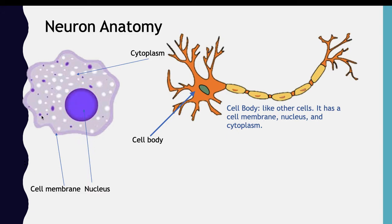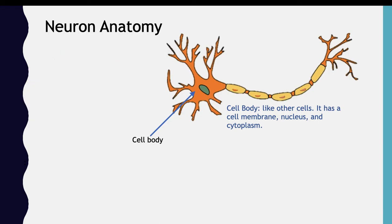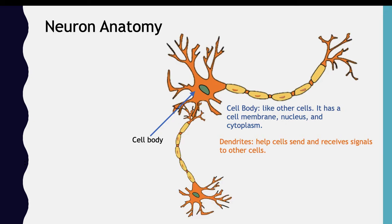The cell membrane is the protective layer of the cell. The next part is the dendrites. The dendrites receive signals and pass them on to the neuron. For example, the signal from one neuron would travel through and get received by the dendrites.